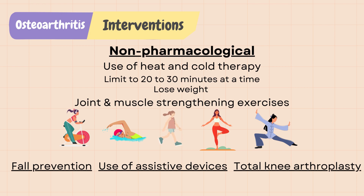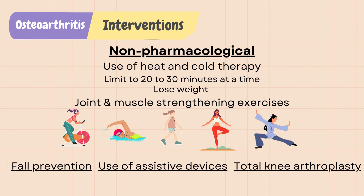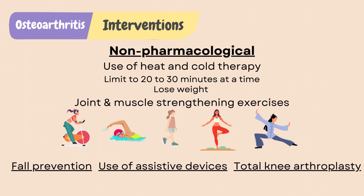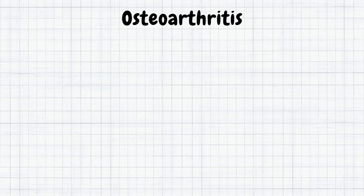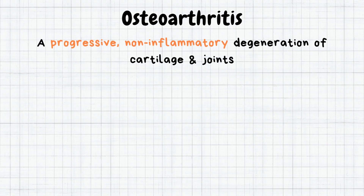When all the above interventions fail, total knee arthroplasty — a surgical procedure in which parts of the knee joint are replaced with artificial parts — can be considered. In the next video, I will go over the differences between rheumatoid arthritis and osteoarthritis for the NCLEX.